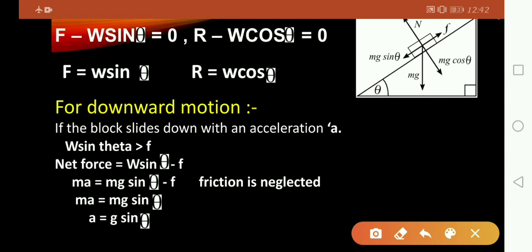If we cancel both m, then the equation will be a equals g sin theta. This is the acceleration when the block slides down an inclined surface.